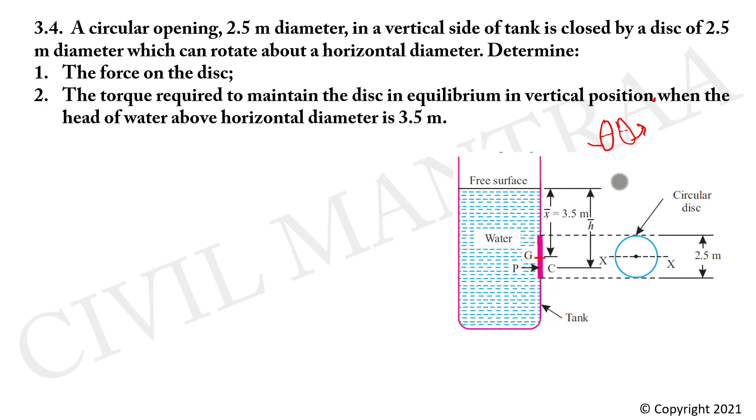The opening area of disk is pi by 4 d square, pi by 4 times 2.5 square, so area is 4.91 square meters.